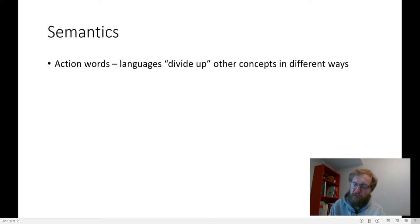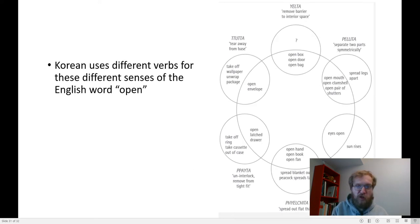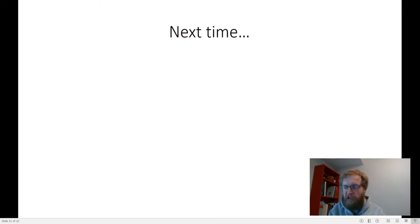It's also the case that in verbs and in action words, we divide up other concepts in different ways across languages. In English, we use the one verb open to mean open your eyes, open a can, open an envelope, open a box, open a book. Those are all totally different kinds of actions. In Korean, there are six different verbs for those six different senses of open.